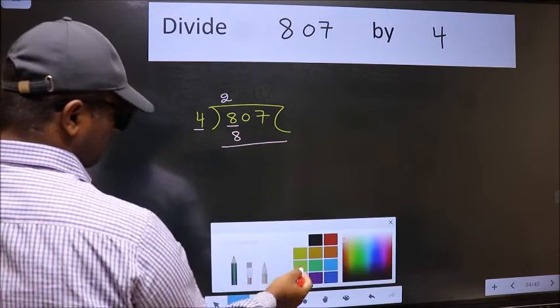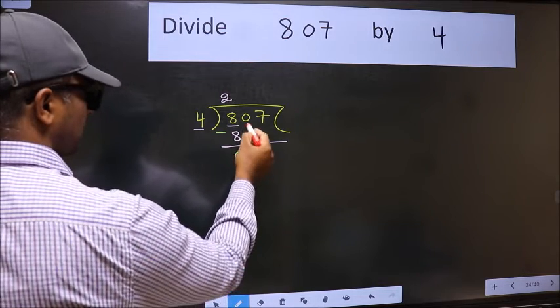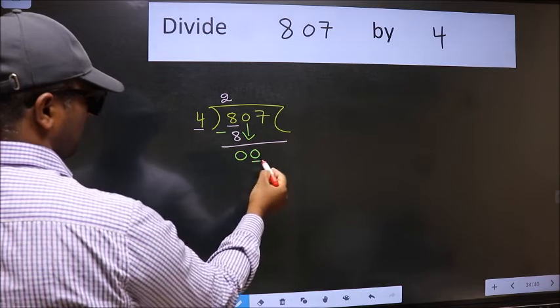Now we should subtract. We get 0. After this, bring down the next number, so 0 down.